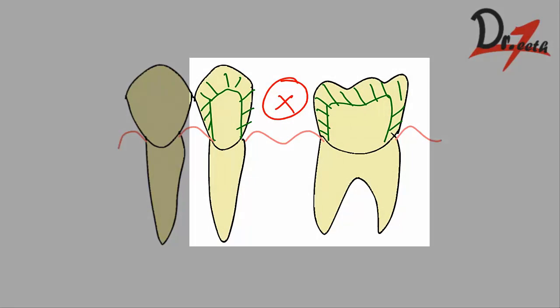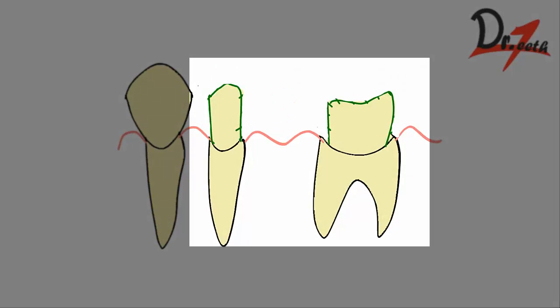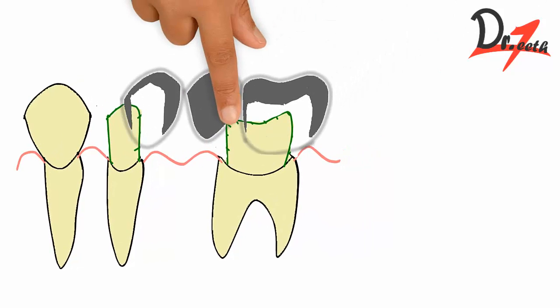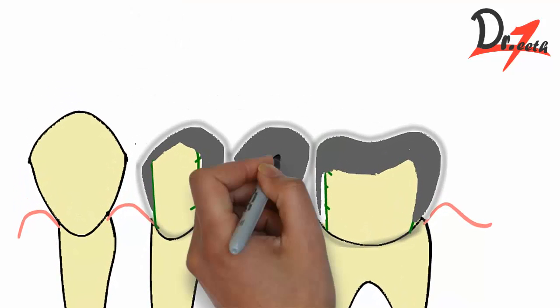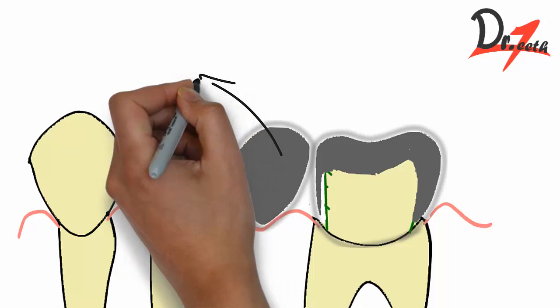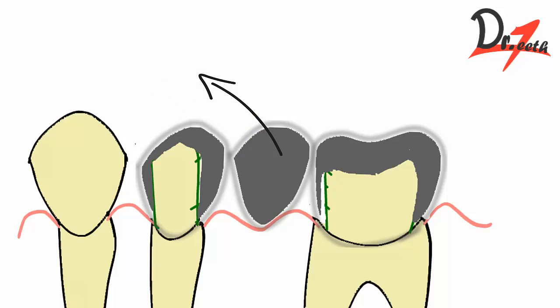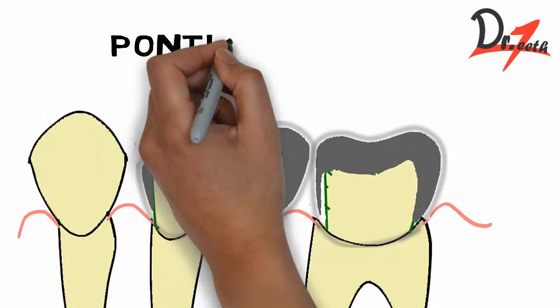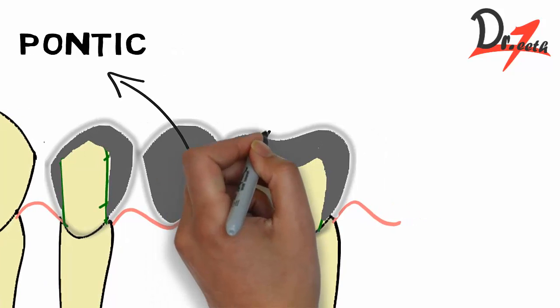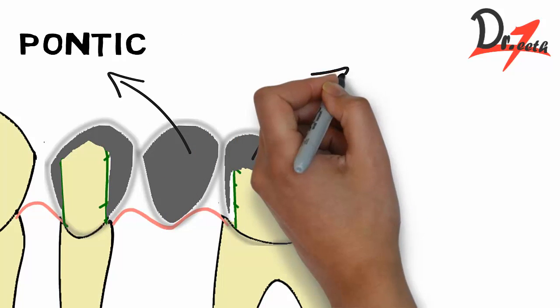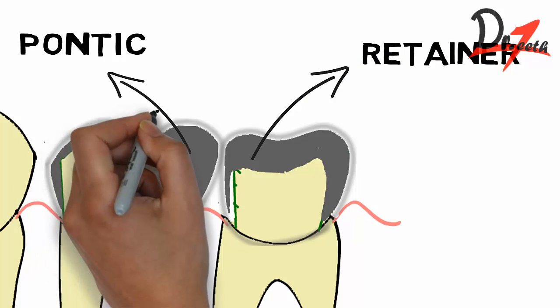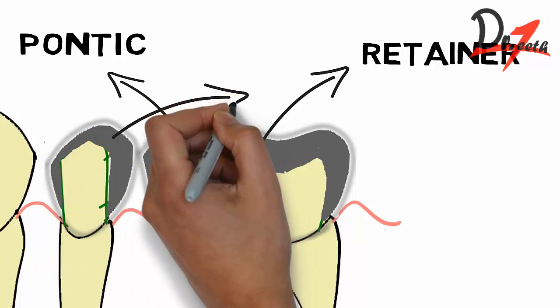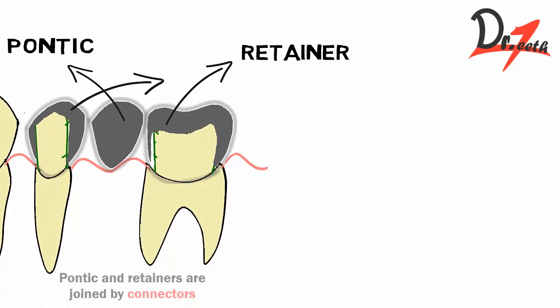The teeth we call abutment teeth because these abutment teeth will support our fixed prosthesis. We will make our FPD and put it on. The tooth which is missing and being replaced we call pontic. The abutment teeth we call retainers because they are retaining our FPD.